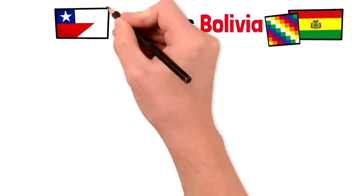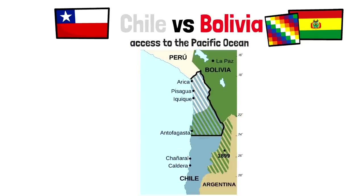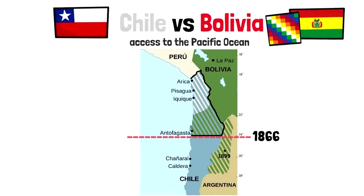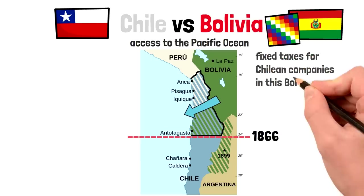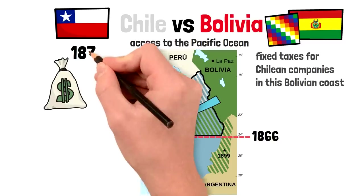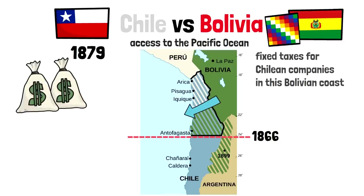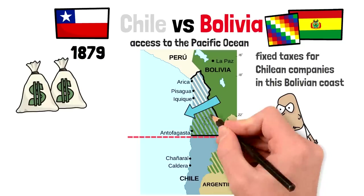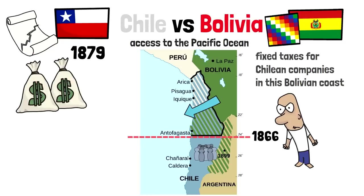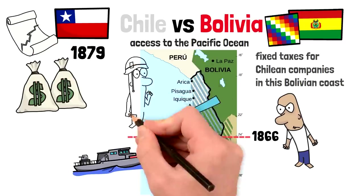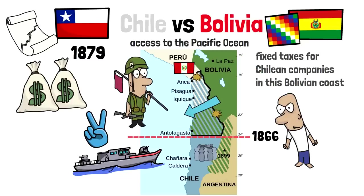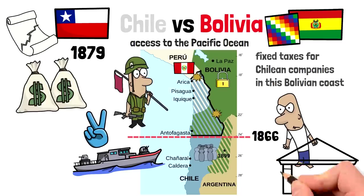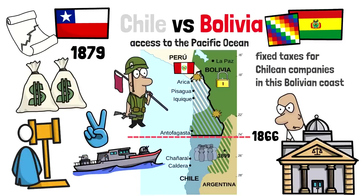Bolivia's biggest territorial dispute is with Chile over access to the Pacific Ocean. In 1866, the two nations declared their border to be the 24th parallel south, allowing Bolivia access to the Pacific. A treaty also set fixed taxes for Chilean companies in the area. In 1879, however, Bolivia increased the taxes. When the companies refused to pay, Bolivia expropriated them and exiled all Chilean nationals. In response, Chile declared all border treaties null, invaded the area, declared war on Bolivia, and occupied its coast. Chile won this war — also fought against Peru — and Bolivia became a landlocked country. Bolivia still claims the area as theirs, and recently appealed to the International Court of Justice, which sided with Chile. Despite the final and binding ruling, Evo Morales of Bolivia claimed they would never give up.